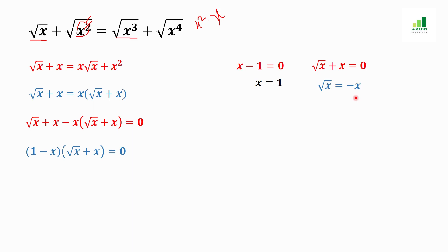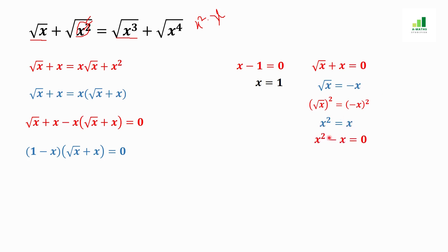For the second factor, we have under root x equals zero. We apply squaring on both sides of the equation so the square cancels the root, giving x equals zero. Moving x to the other side and taking common x, we get x equals zero.